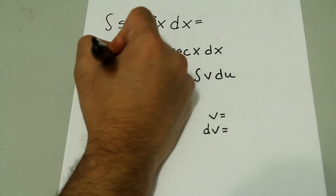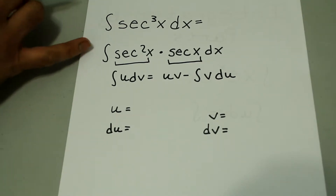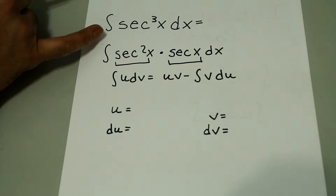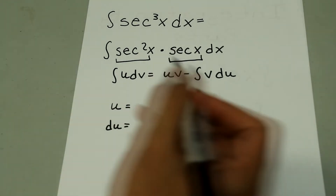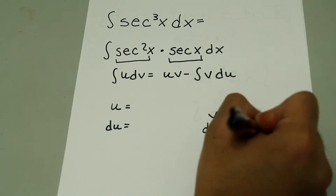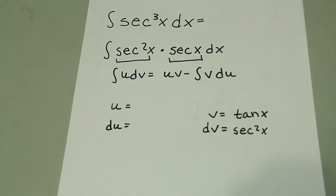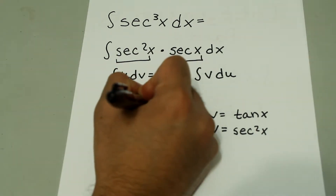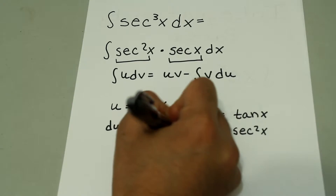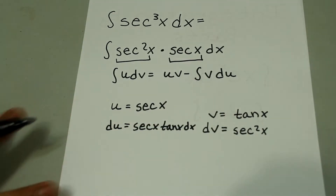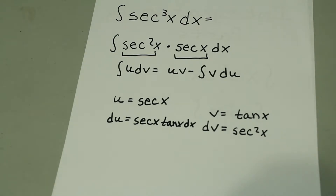So if we look at the expression we broke up, which one is easy to differentiate and which one is easy to integrate? Remember, if this original problem was just the integral of secant squared x dx, the answer would have just been tangent x. So we're going to set dv as secant squared x, and the integral of that is just tangent x. If we set u equal to secant x, then the derivative of that is just secant x tangent x dx. These are standard derivatives and integrals, so I highly recommend you have those memorized, especially when working with integration by parts.